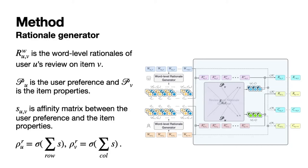By taking the row- and column-wise sum of the affinity matrix, we are able to obtain the probabilities of potential rationales to become true rationales. The binary mask Z for review-level Rationale Generator can be calculated same as the word-level rationale generator.